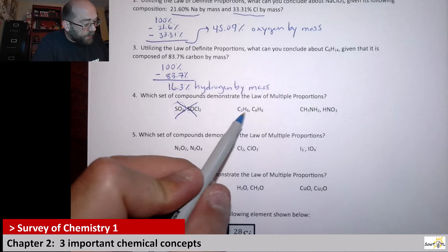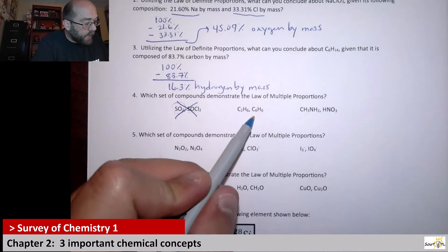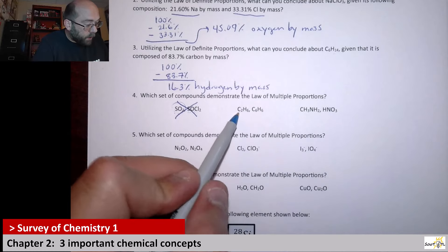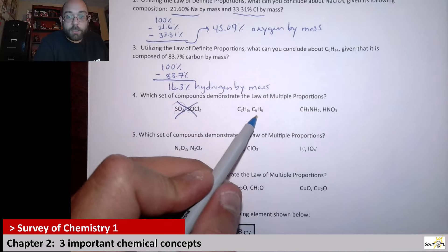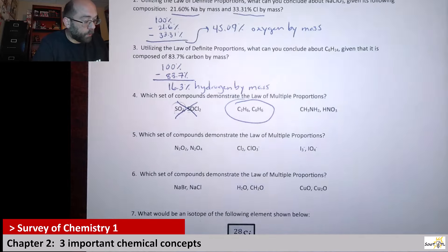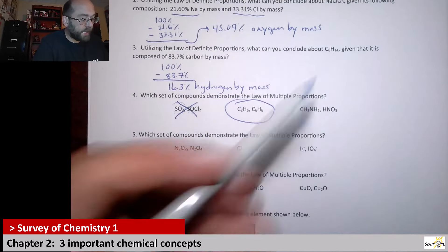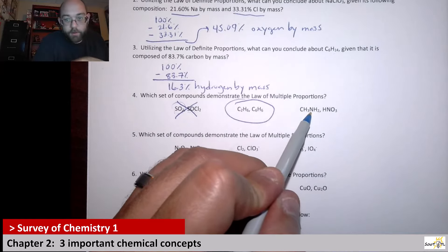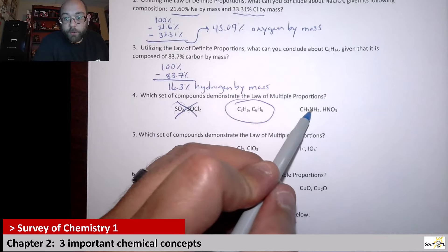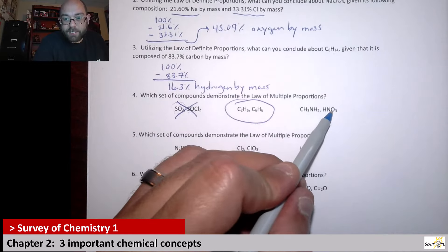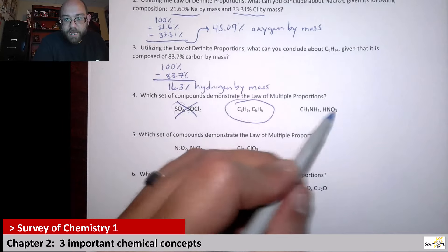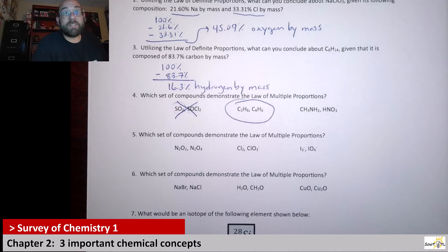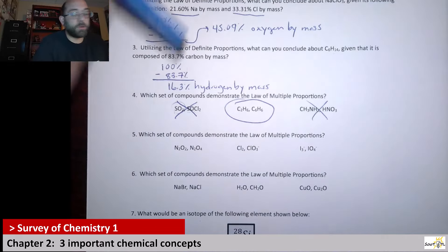For the pair C2H6 and C6H6: both have carbon and hydrogen — a two-to-six ratio versus a six-to-six ratio — so this is in fact following the law of multiple proportions. For the pair CHN and CNO compounds: the first has carbon, hydrogen, and nitrogen, while the second has carbon, nitrogen, and oxygen. Since the set of elements differs between them, this isn't following the law of multiple proportions.